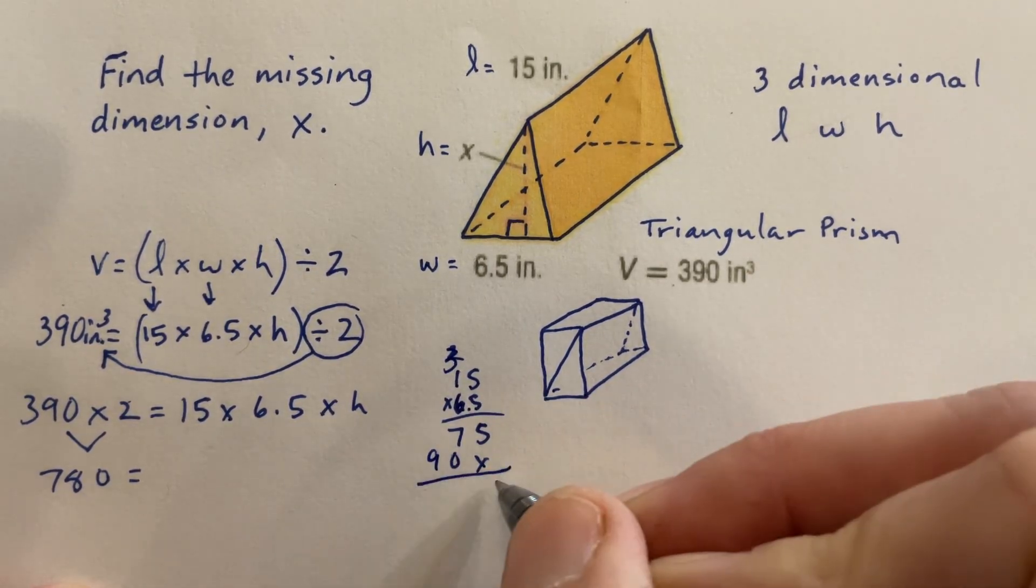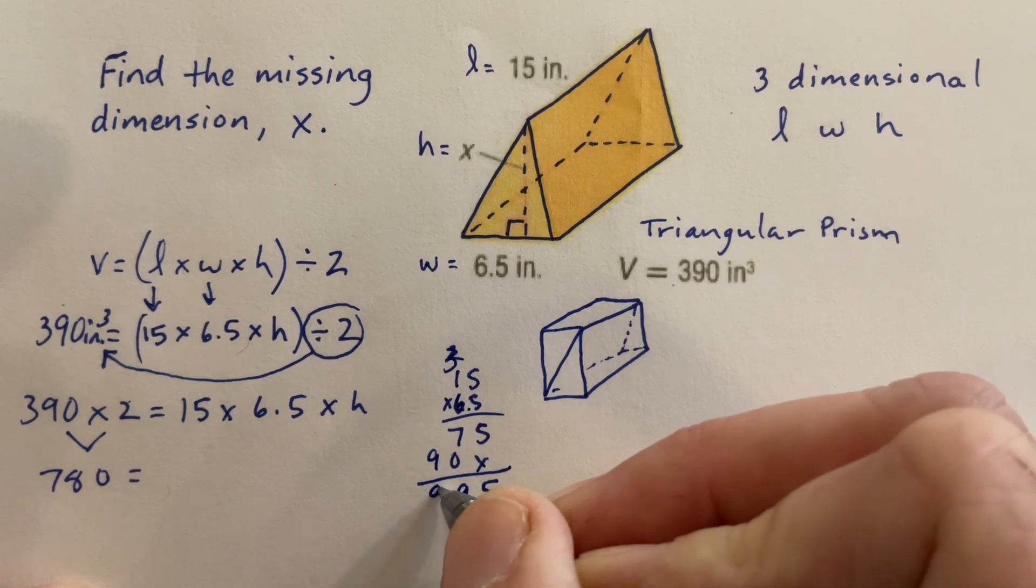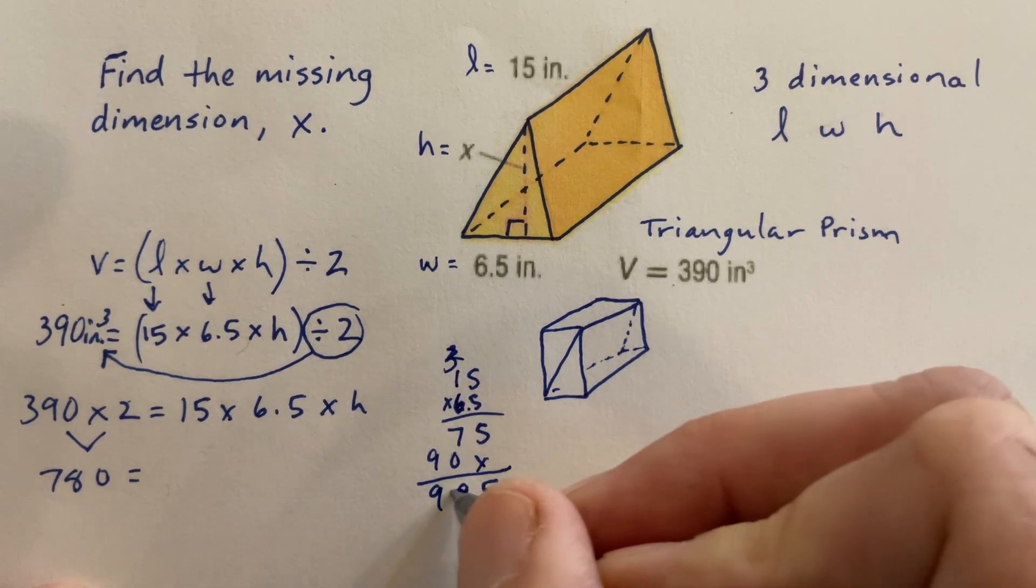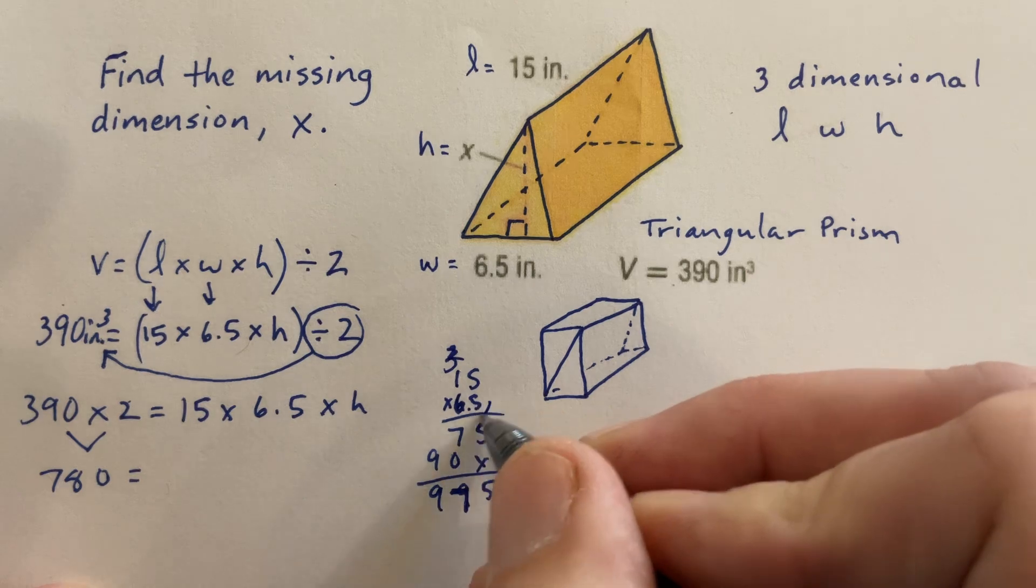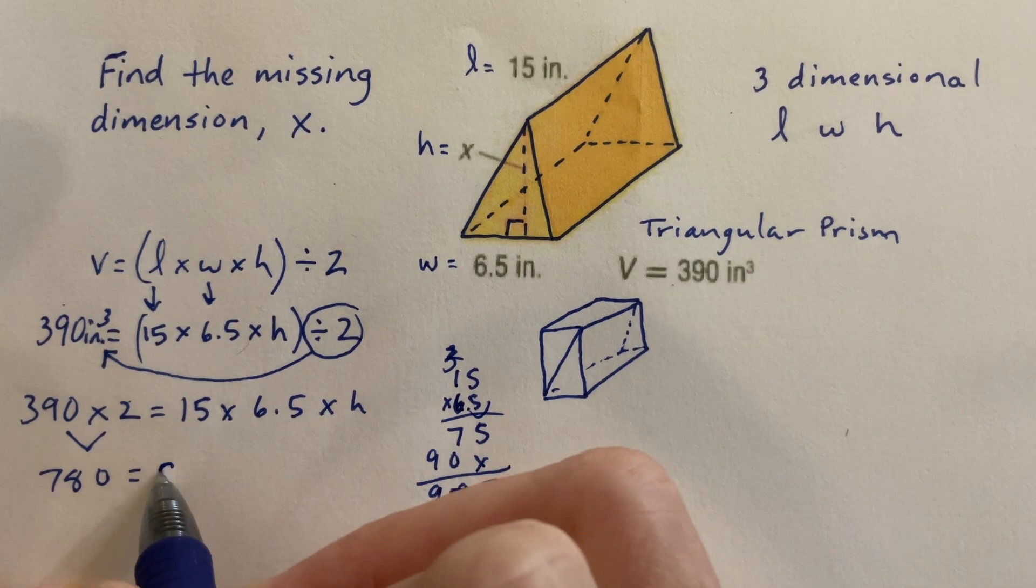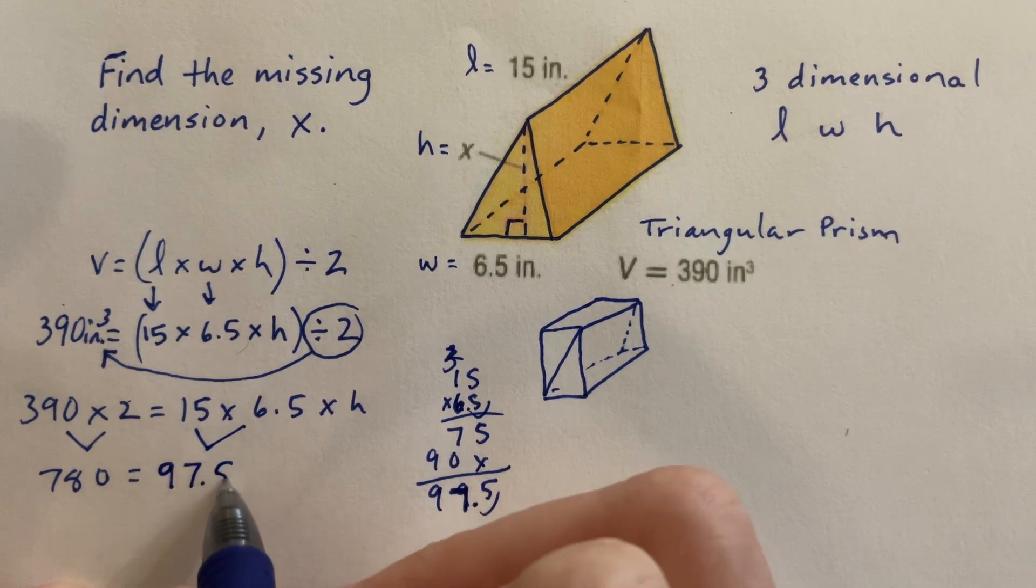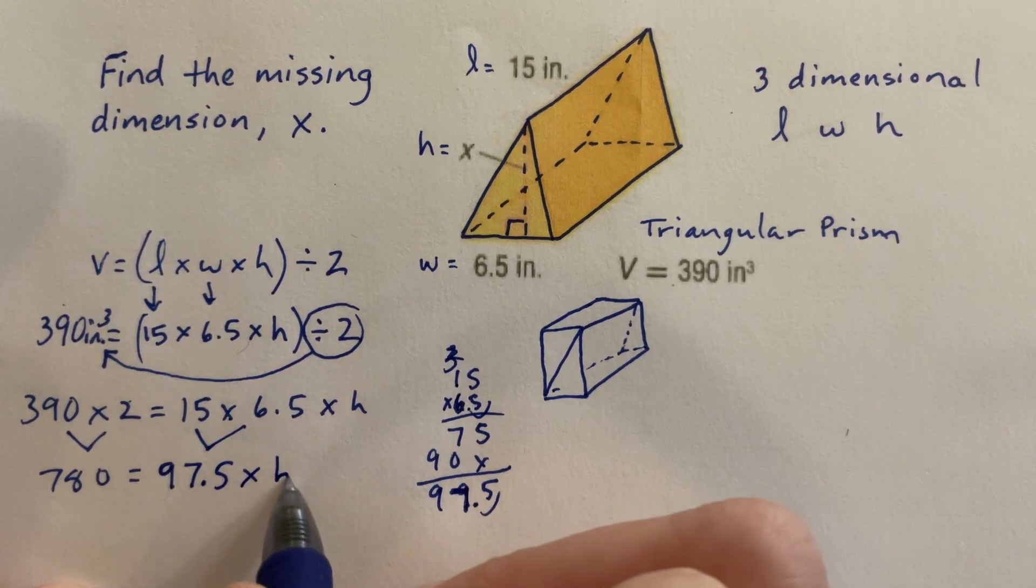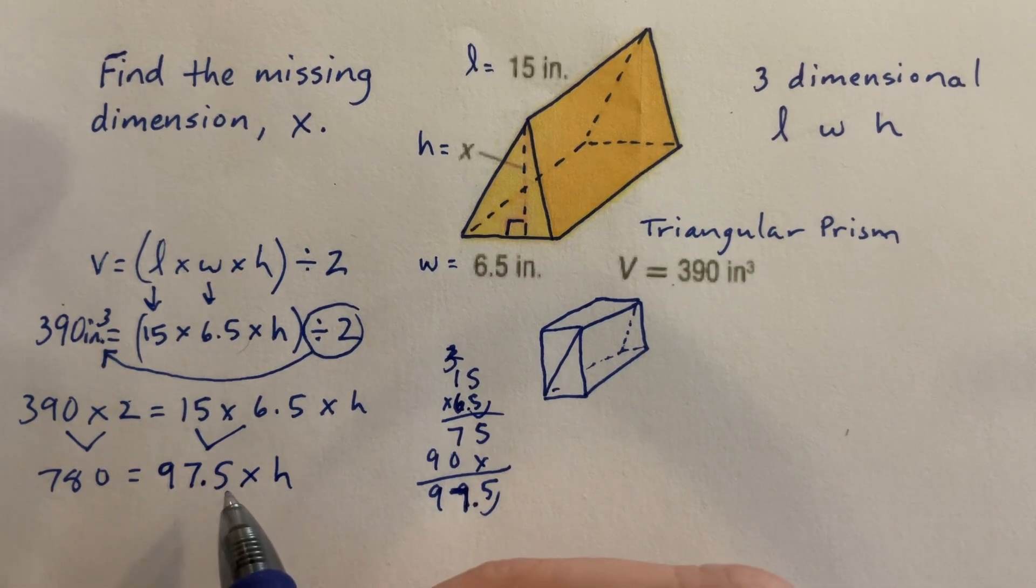6 times 1 plus 3 is 9. Add this all up, I get 975. Don't forget this decimal, 97.5. So I just simplified these two to 97.5 times the height, what we're trying to find.